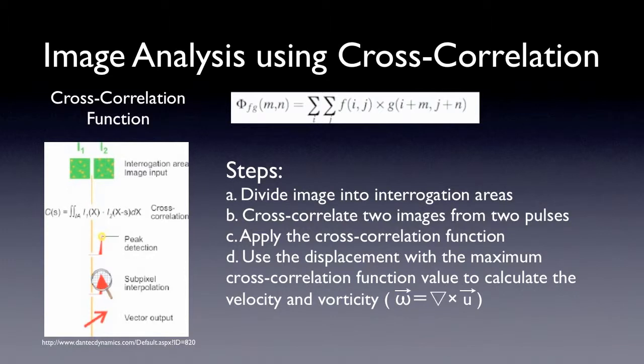The PIV software that we use in the lab is called PixelFlow. The principle of PixelFlow to find displacement between particle pairs is called cross-correlation. And here is a cross-correlation function. We have F and G denoting the image intensity distribution of the first and second image. M and N are the pixel offset between the two images.